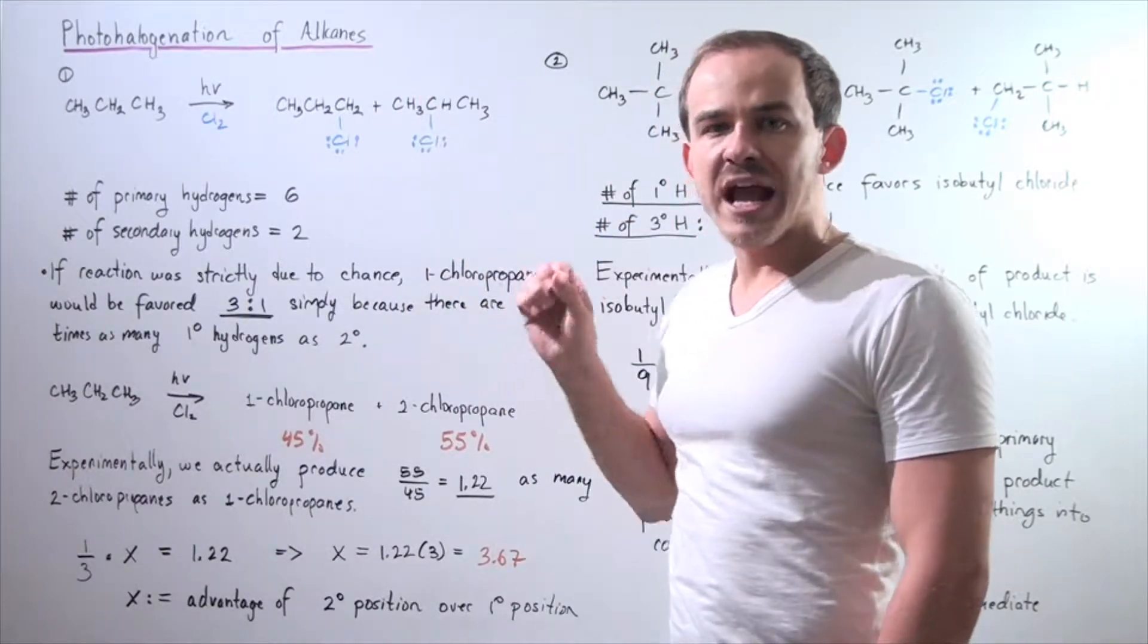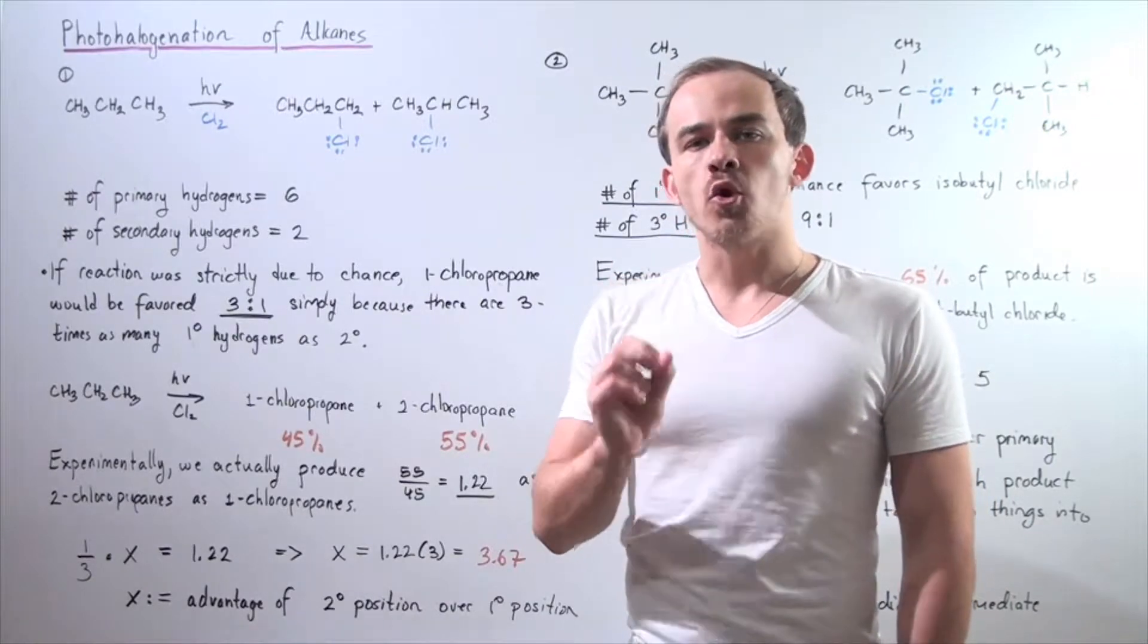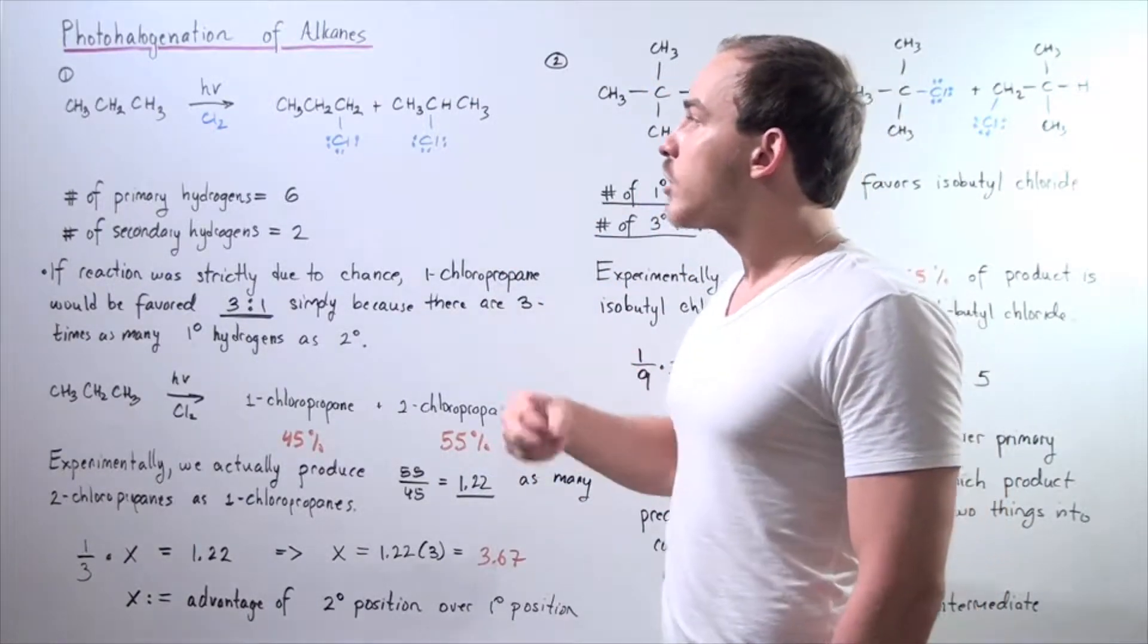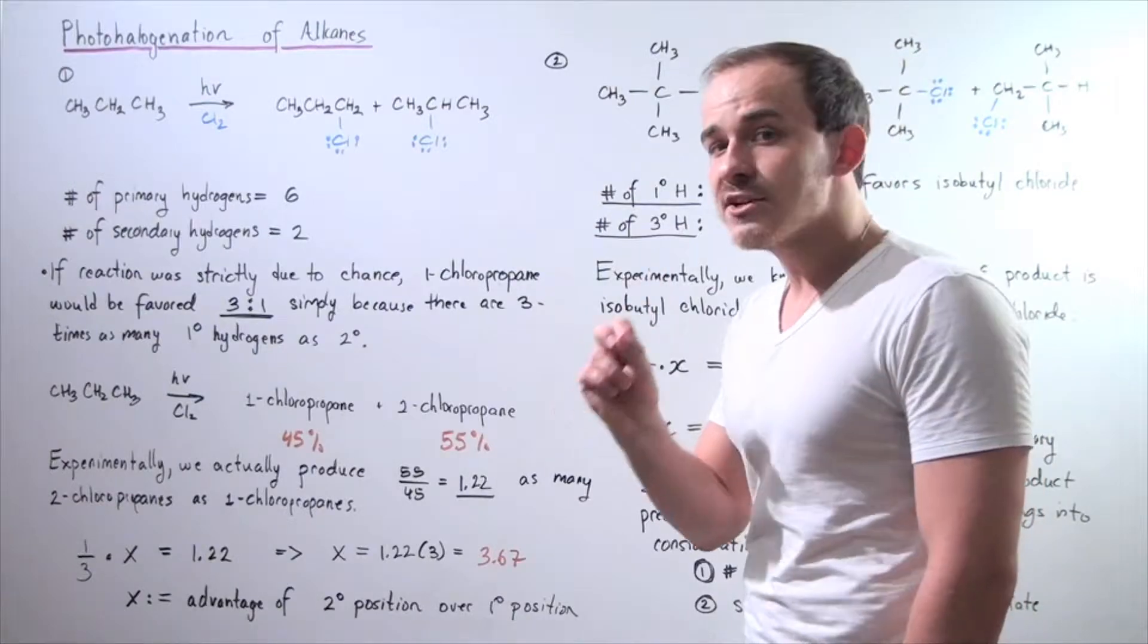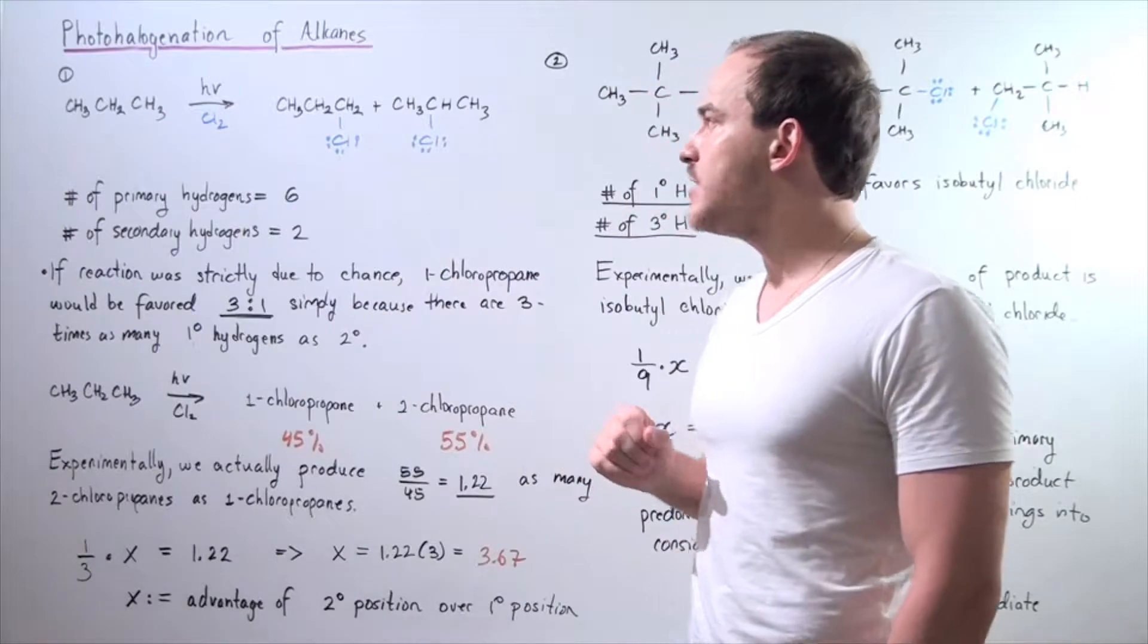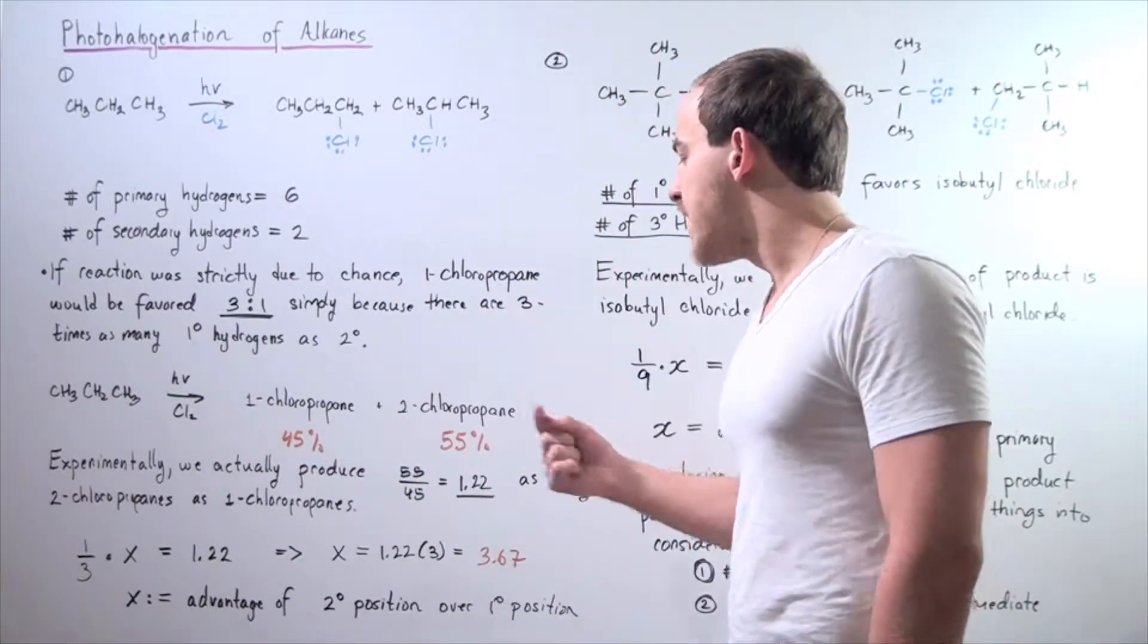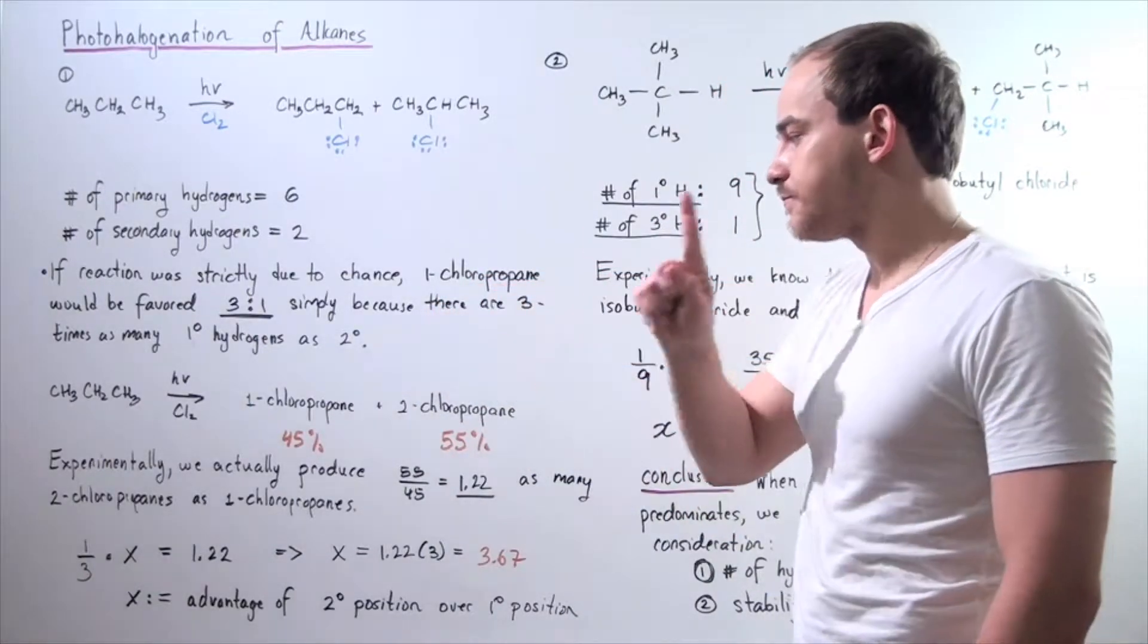Now, if this photochlorination reaction of propane was strictly due to chance, that means one chloropropane would have a three to one advantage over two chloropropane, simply because there are three times as many primary H's as secondary H's. But actually, if we look at our experimental results of this photochlorination reaction, we see that only 45% of that product is composed of one chloropropane, while 55% is composed of two chloropropane.